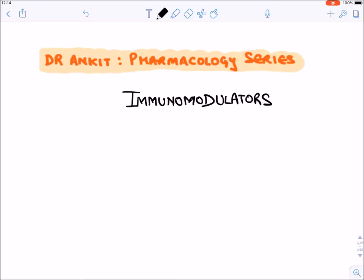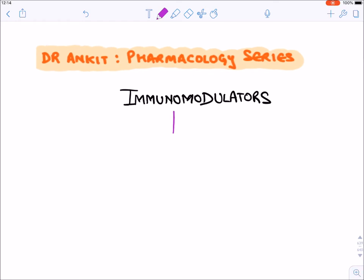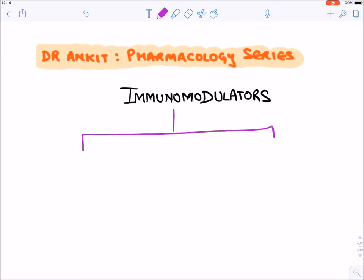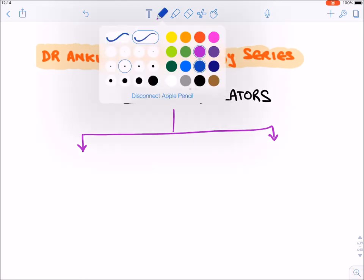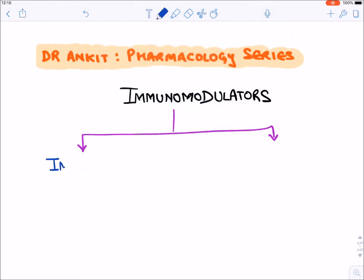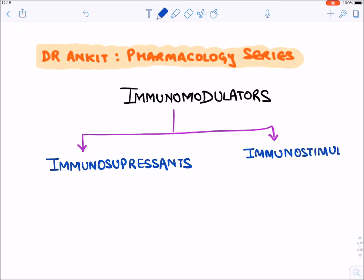Today we will be discussing immunomodulators — drugs that modify the immunity of the body. They are divided into two categories: immunosuppressants, which decrease immunity, and immunostimulants, which increase immunity. Immunosuppressants will reduce immunity while stimulants will increase it.